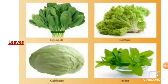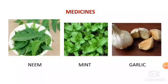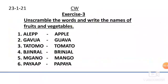Not only this — plants such as neem, mint, garlic, tulsi, etc. are used to make medicines and fight diseases. So, children, that was all about this lesson. Hope you have understood it well. Today's assignment is exercise 3: unscramble the words and write the names of fruits and vegetables. This exercise you will do in your exercise book neatly. Thank you and God bless you.